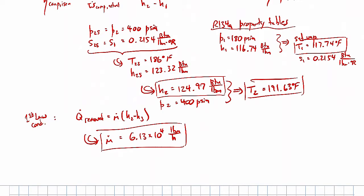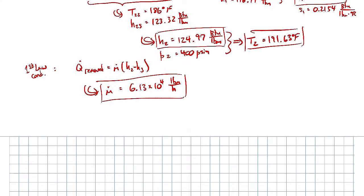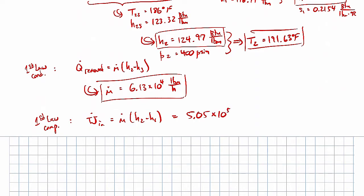There are some unit conversions required when working in English units. Going back to the problem, part D asks for compressor power in BTUs per hour. From the first law analysis for the compressor, the power going in is M dot times (H2 minus H1). Plugging in the numbers gives 5.05 times 10 to the fifth BTUs per hour.